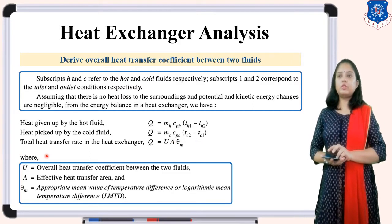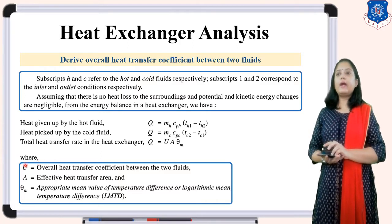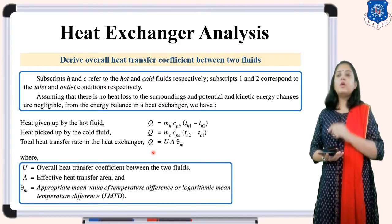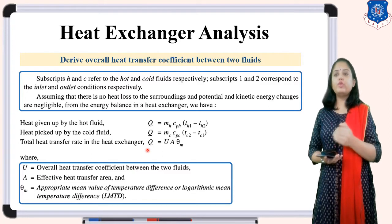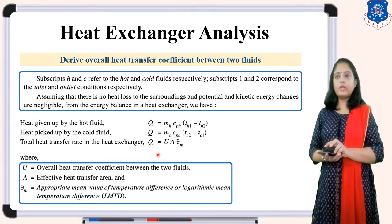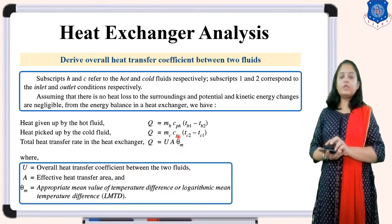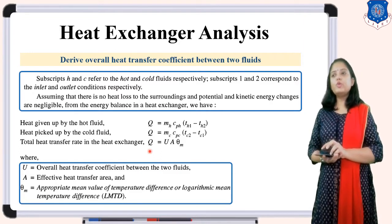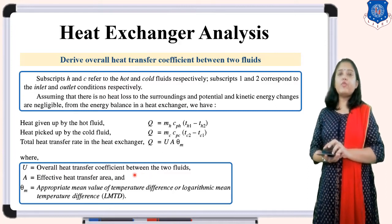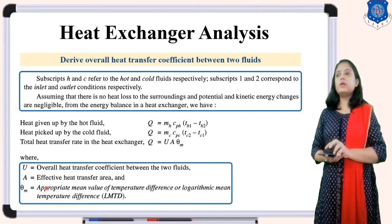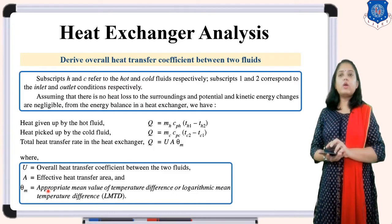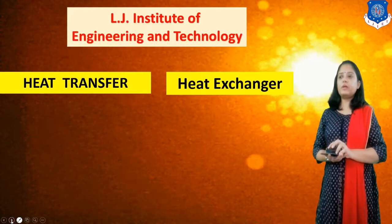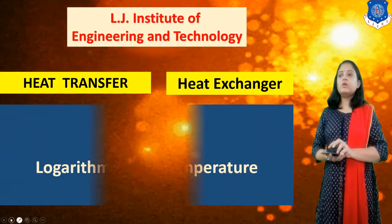The total heat transfer rate in the heat exchanger is Q = U·A·θM, where U is the overall heat transfer coefficient, A is the effective heat transfer area, and θM is the appropriate mean value of temperature difference, also called the Logarithmic Mean Temperature Difference (LMTD). When two fluids exchange heat, the temperature difference changes along the exchanger, so we use θM instead of a simple delta T.